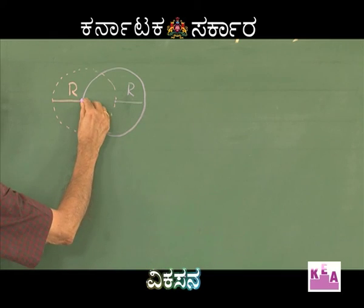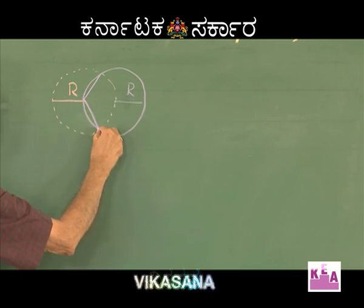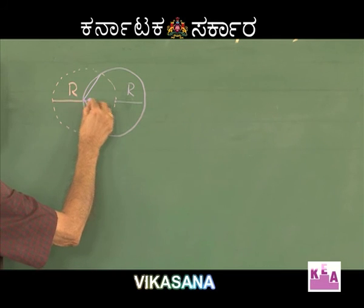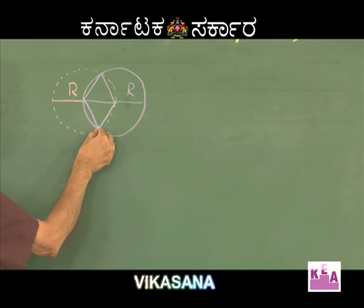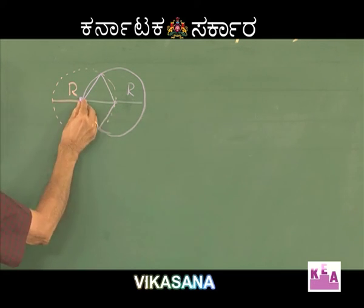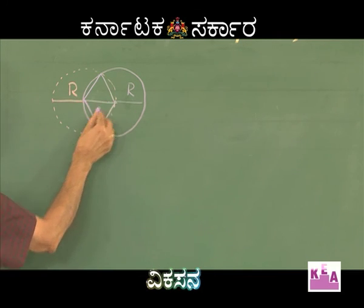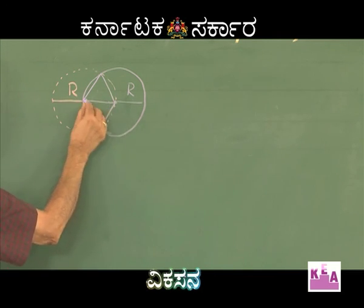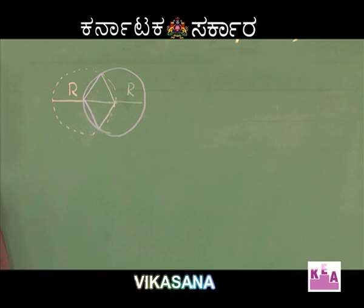Join this point, this point, and these two also. You can notice that all the connecting sides are equal to R — R, R, R, R, R, and R. Therefore, these two triangles are equilateral triangles.